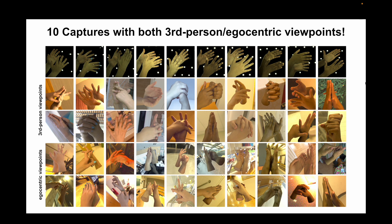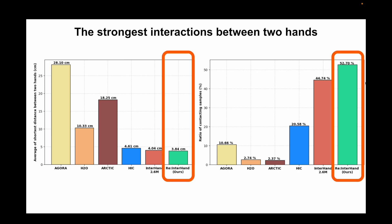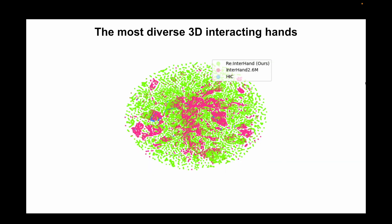Our Re-InterHand dataset consists of 10 captures, each taken from a unique subject ID. We recruited subjects as diverse as possible in terms of gender and race. One big advantage is that we can render images to any viewpoint given camera parameters, and we additionally render to simulated egocentric viewpoints. Our dataset has the strongest interaction between two hands — the shortest average distance between hands and the highest ratio of contacting hands compared to existing datasets — and the most diverse 3D interacting hand poses as shown by our t-SNE visualization.